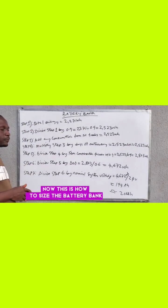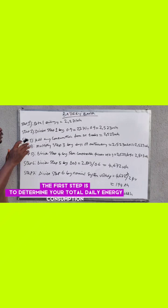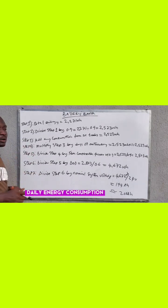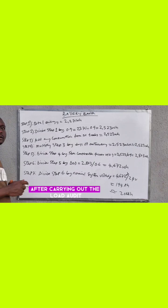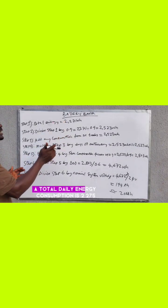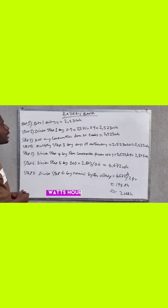Now this is how to size the battery bank. We have seven steps. The first step is to determine your total daily energy consumption, which we have from our load analysis table after carrying out the load audit. So our total daily energy consumption is 2275 watt-hours.